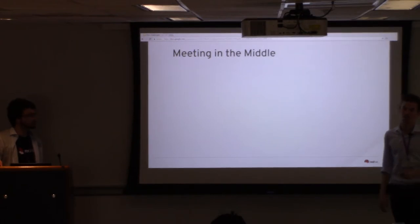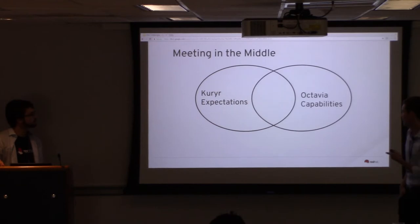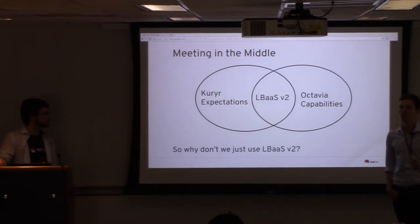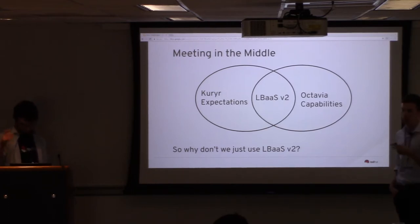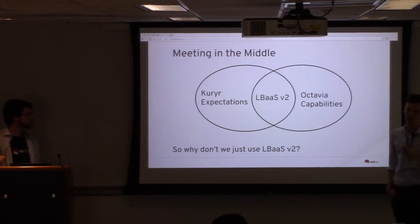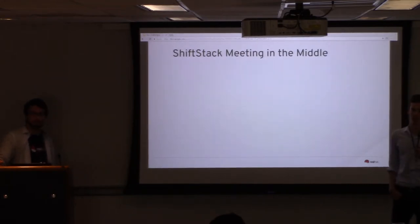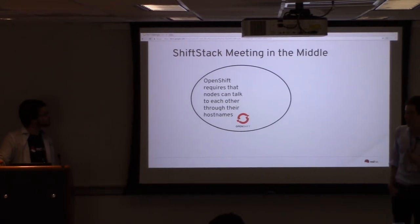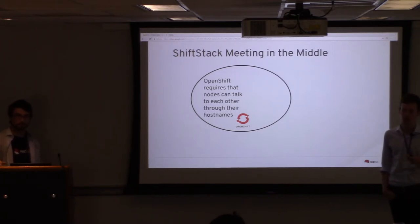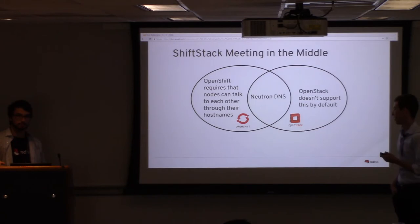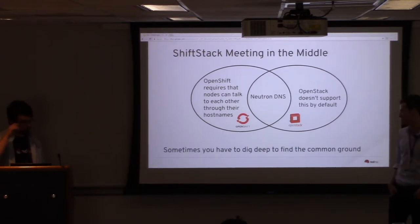Meeting in the middle: how did we fix this temporarily? On one side you have Kuryr's expectations, on the other Octavia's capabilities. In the middle, there's LBaaS version 2. The current OpenStack deployment uses Octavia, and also LBaaS v2 is deprecated, so we're currently in talks with the Octavia team to get them to reconfigure Octavia to emit events. For now, we're using LBaaS v2 for testing purposes. This isn't the first time the team had to meet in the middle — in the past, OpenShift required that nodes communicate through their hostnames rather than IP addresses, and OpenStack didn't support this. The solution they found is called NeutronDNS, a tool already built into OpenStack that nobody knew about. Sometimes you have to dig deep to find common ground.